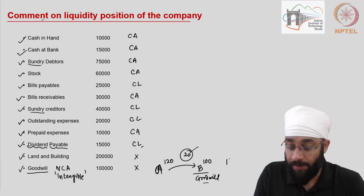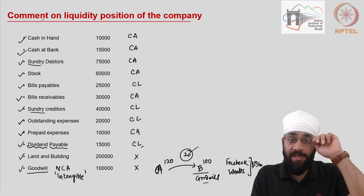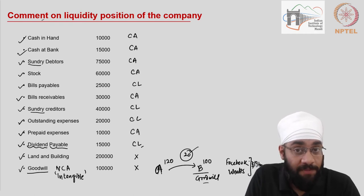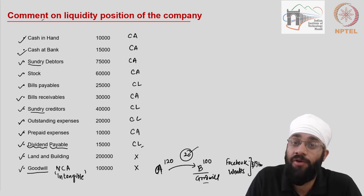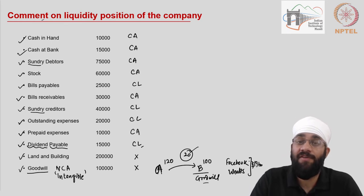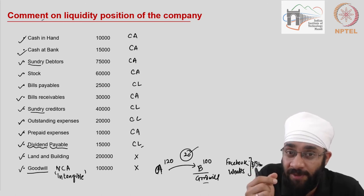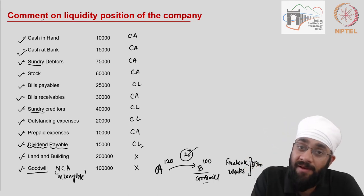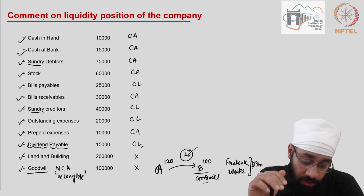For example, Facebook purchased WhatsApp for around 19 billion dollars, while the actual value of WhatsApp's assets must have been much lower. What Facebook saw was a benefit in the user base WhatsApp had. After the purchase, Facebook used WhatsApp's user base to increase its own subscriber network — for instance, suggesting WhatsApp contacts as friends on Facebook. That, in short, is what goodwill is.